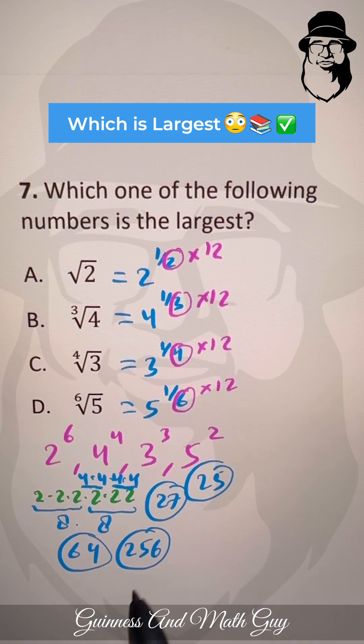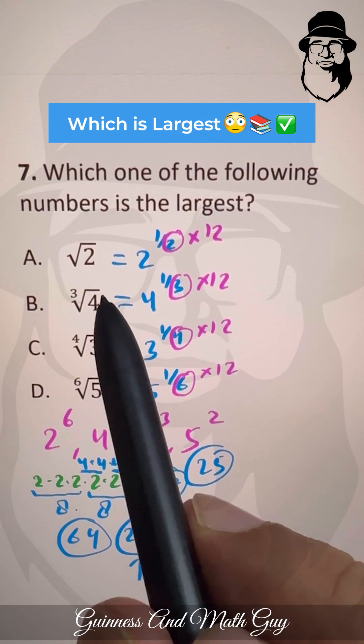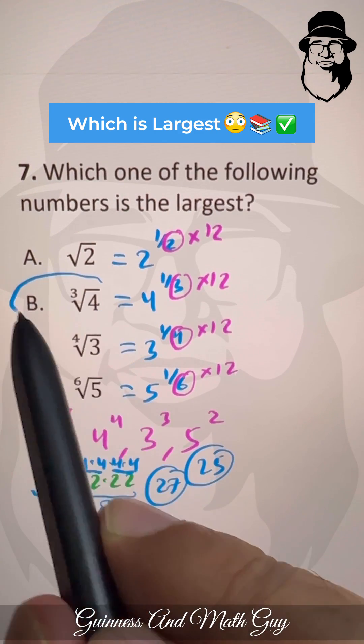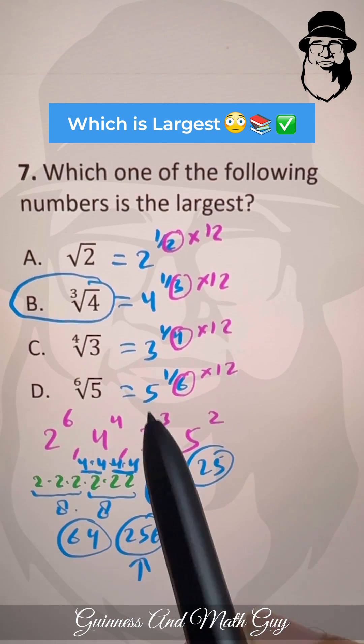So the largest is 256, and that is our second choice — that is choice B.